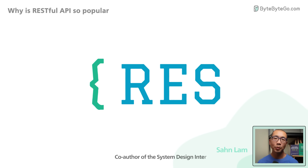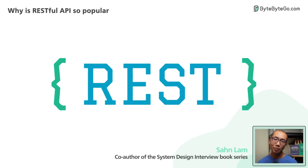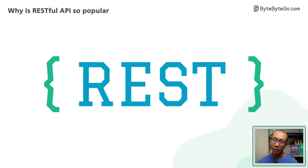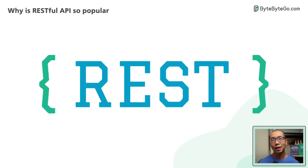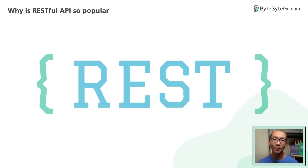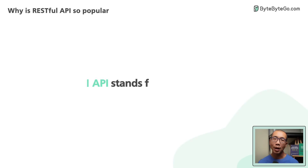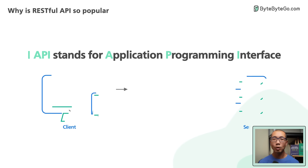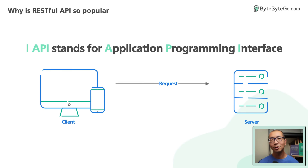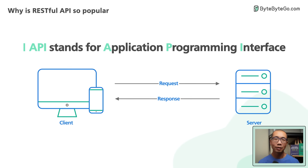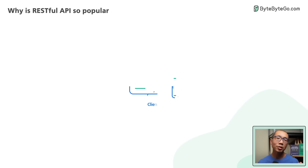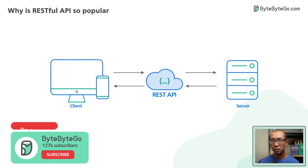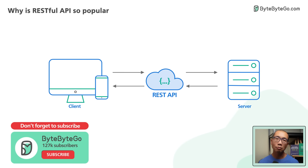REST is the most common communication standard between computers over the Internet. API stands for Application Programming Interface — it is a way for two computers to talk to each other. The common API standard used by most mobile and web applications to talk to the servers is called REST.